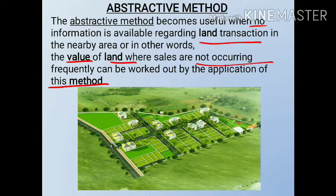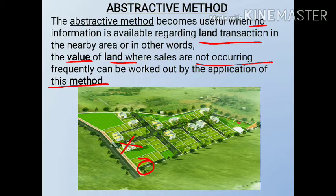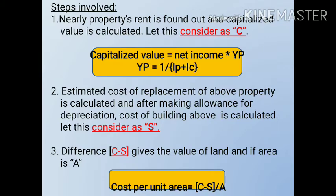How do we use the abstractive method? Suppose we have a plot and we assume that the building on it is not there. In the nearby area, there is no reference point available. So you can find this reference point from the building itself. What you have to do is find out the rent and calculate the capital value.